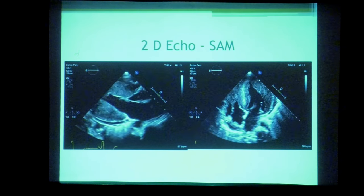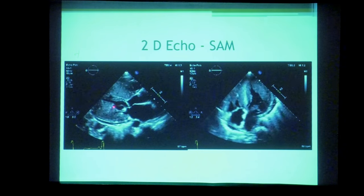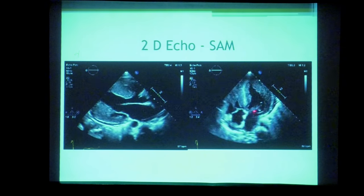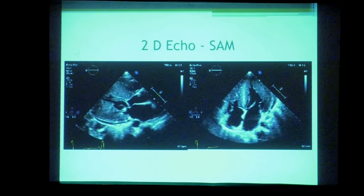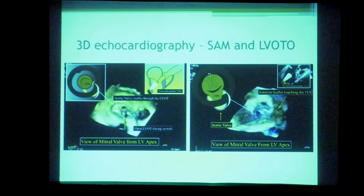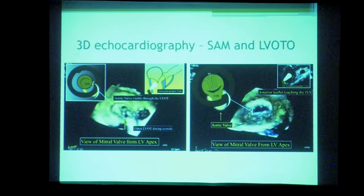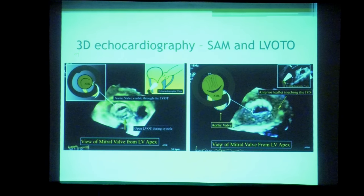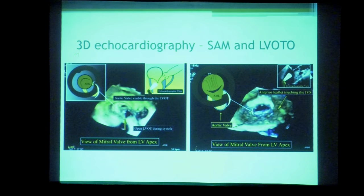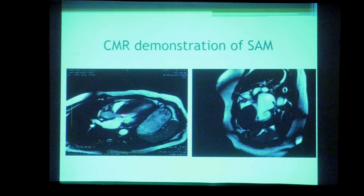Video clips demonstrate SAM clearly — the mitral leaflets are seen bending forward and touching the septum, consistent with the hydrodynamic effect pushing the leaflets anteriorly. Three-dimensional echocardiography can also demonstrate SAM: in a normal 3D echo viewed from the mitral apex, the aortic valve and LVOT are clearly visible; when SAM is present, the anterior mitral leaflet occludes the LVOT and the aortic valve cannot be visualized through it. MRI can equally demonstrate SAM, showing the leaflets moving toward the bulged septum.